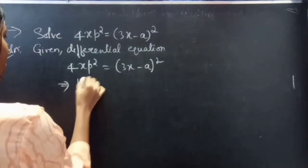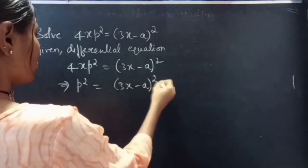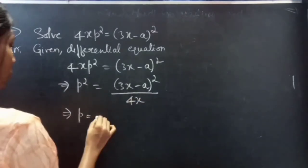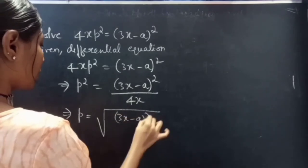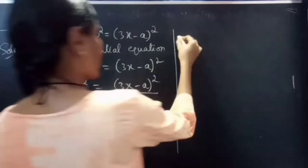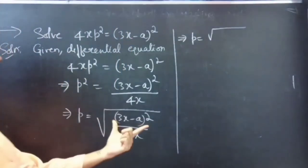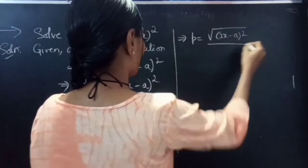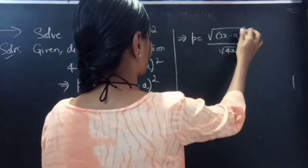You can write it as p² equals (3x − a)² by 4x, then p equals square root of (3x − a)² by 4x. Again, you can write this as p equals square root of (3x − a)² by square root of 4x.